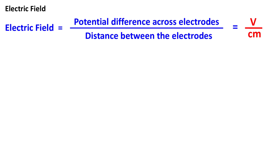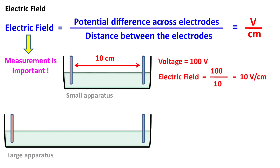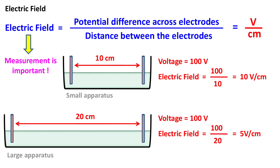While carrying out electrophoresis, the measurement of electric field is very important because the electrophoresis apparatus comes in various sizes. For example, if the distance between the two electrodes is 10 centimeters and the potential difference is 100 volts, then the electric field will be 10 volts per centimeter. If the distance is 20 centimeters and the potential difference is 100 volts, then the electric field will be 5 volts per centimeter.